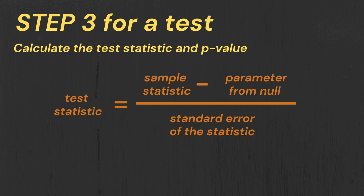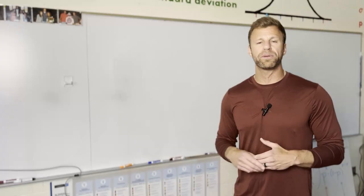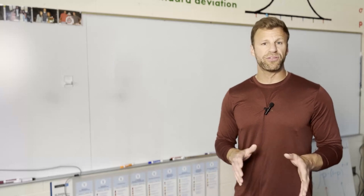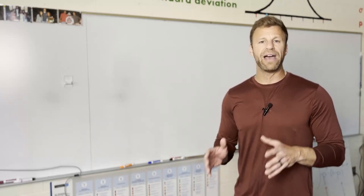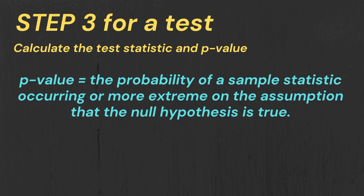So once again, use that formula sheet so you use the right formula for the right standard error for that particular problem. Then you're going to use normal CDF if it's a z-score or TCDF if it's a t-score to calculate your p-value: the probability that your observed statistic occurs or more extreme on the assumption of the null hypothesis is true.